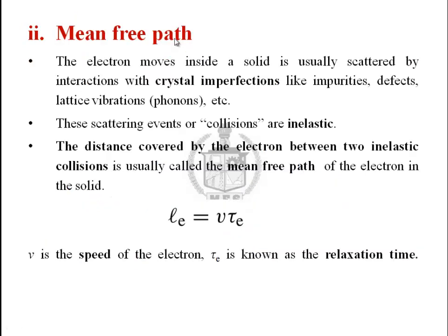Next is mean free path. If you are adding any impurity to that system, the electron gets scattered — it will collide. Such a collision is an inelastic collision. The distance covered by the electron between two inelastic collisions is termed the mean free path. It can be calculated using the equation: L_e is equal to v times tau_e, where v is the speed of the electron and tau_e is the relaxation time.